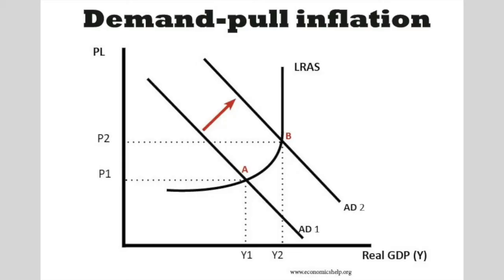When the economy is overheating — growing very quickly — this tends to push up prices because firms can't keep up with demand, so they simply put up prices. It's a natural reaction to shortages. So when you look at economies growing very rapidly, like the UK in the late 1980s, you see a rise in inflation, and we call that demand-pull inflation.